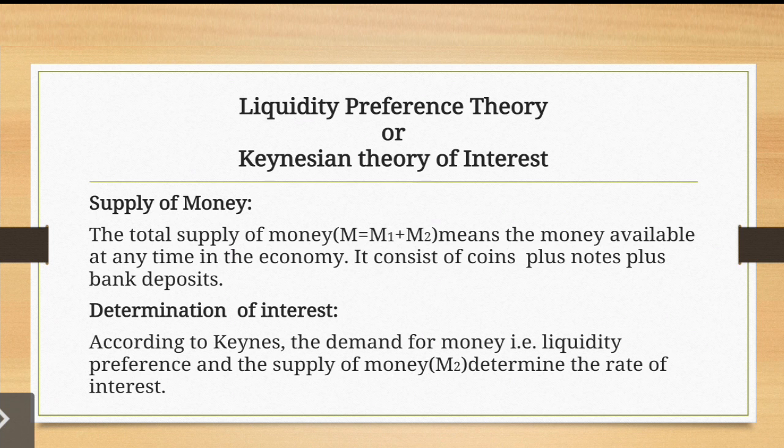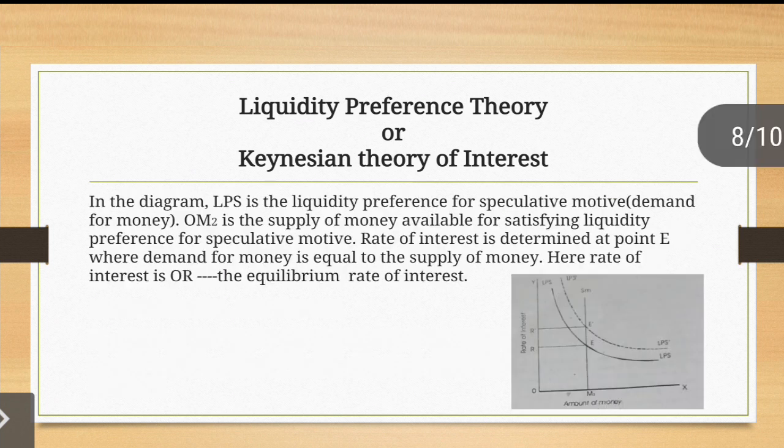Now let's look at the determination of interest — how we determine the rate of interest. According to Keynes, the demand for money (liquidity preference) and the supply of money M2 together determine the rate of interest.